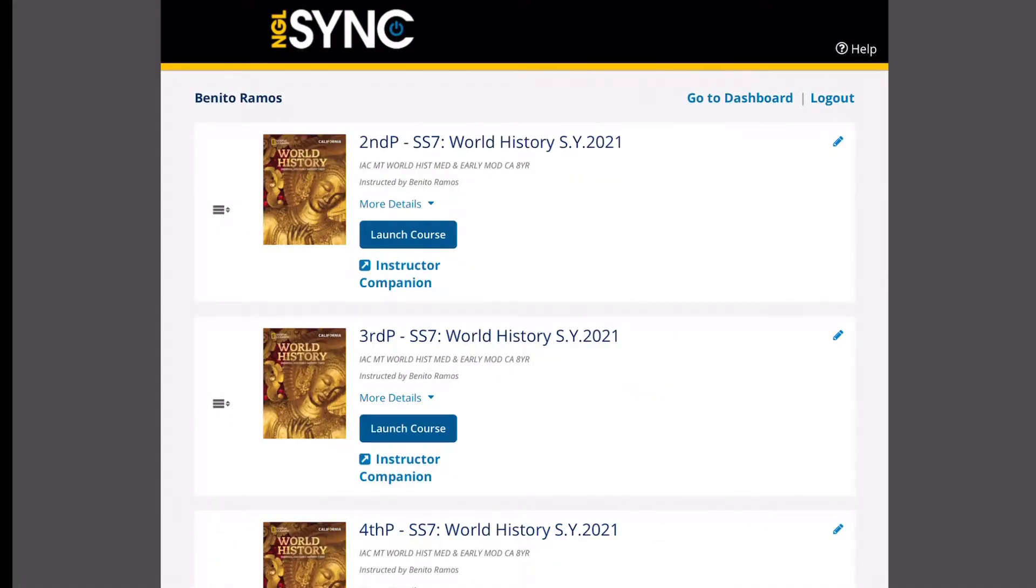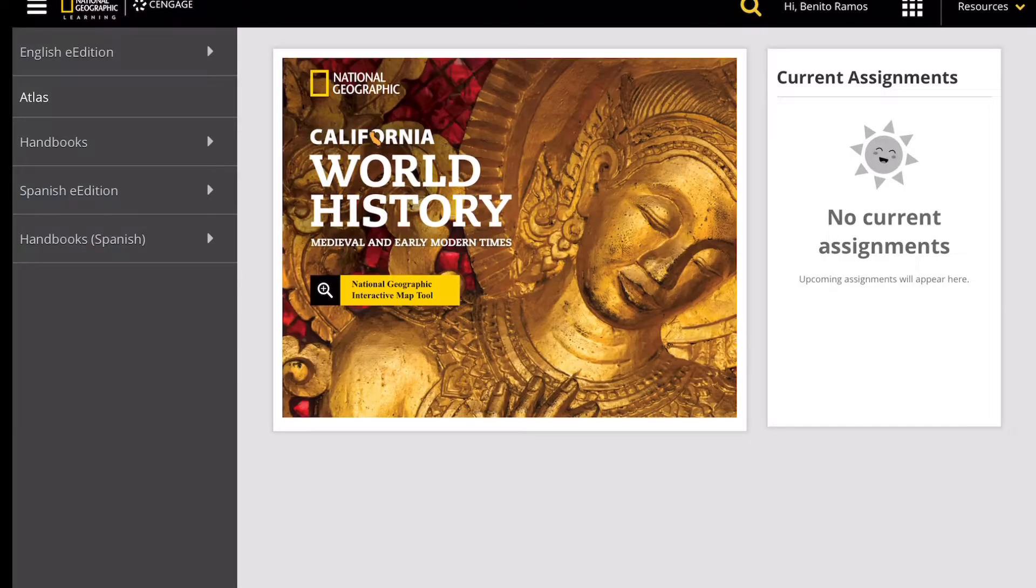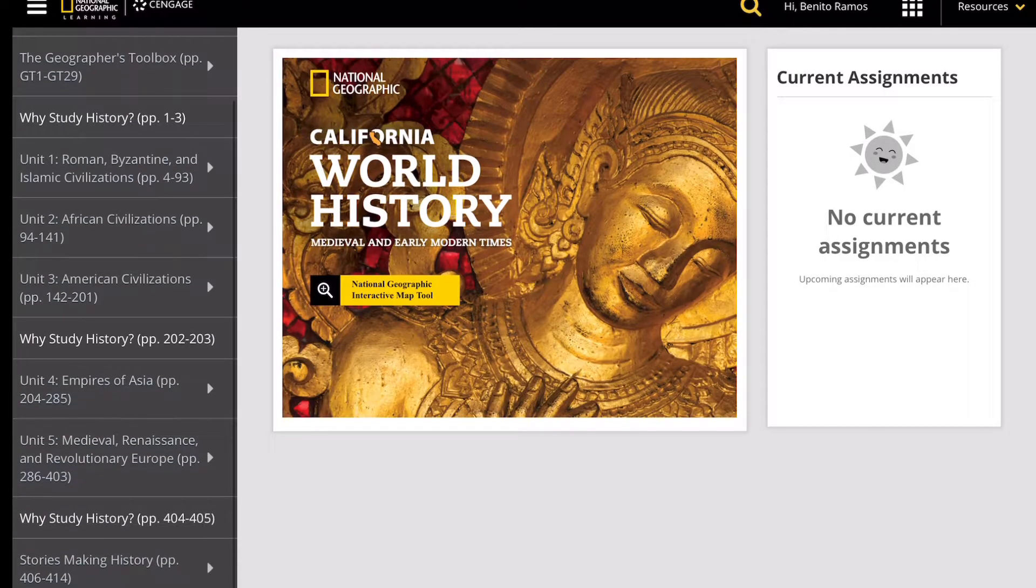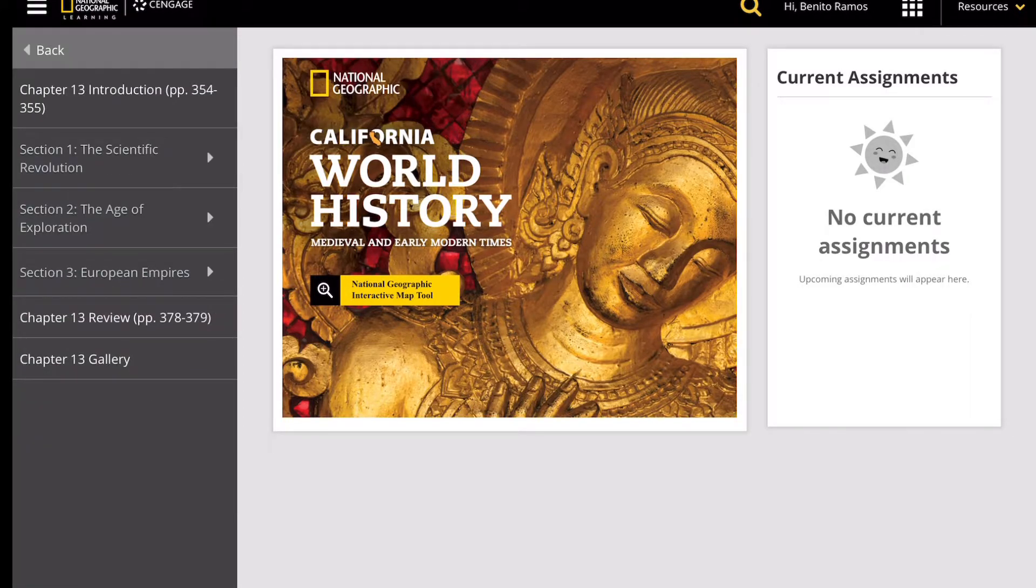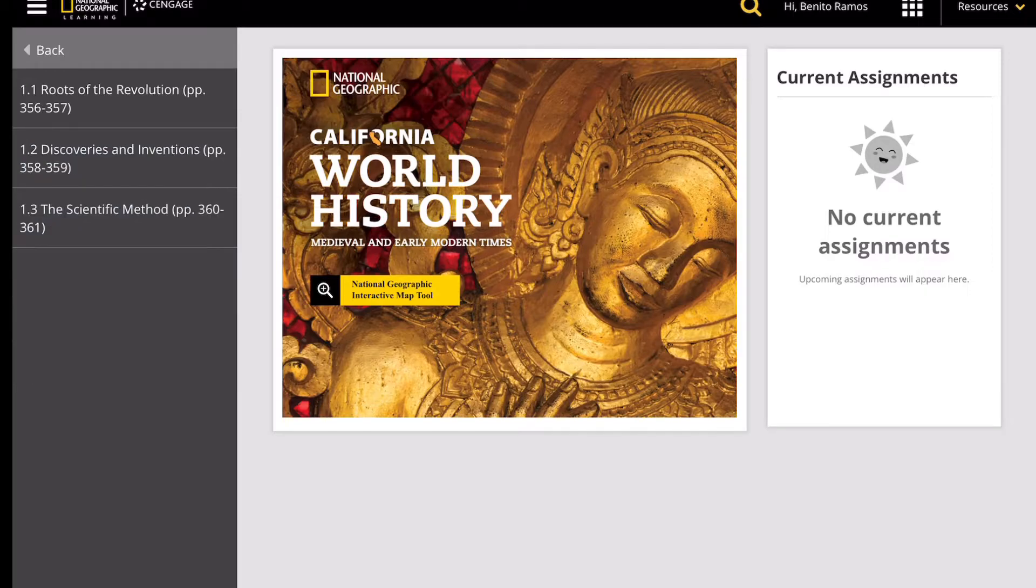Chapter 13, the age of science and exploration, section 1, the scientific revolution. And today we'll learn about the roots of revolution, and that is in pages 356 to 357.